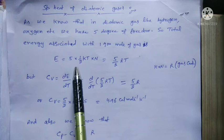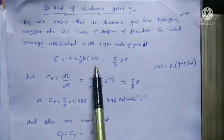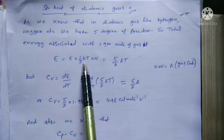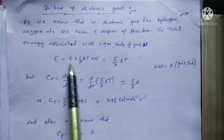So total energy associated with one gram mole of gases is equal to 5 × (1/2)kT × N. N is Avogadro's number and (1/2)kT is energy associated with each molecule per degree of freedom.